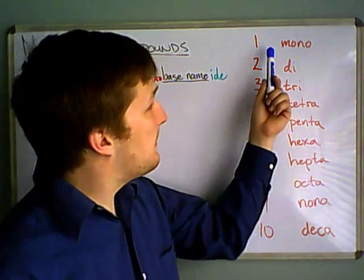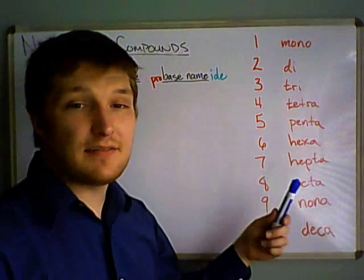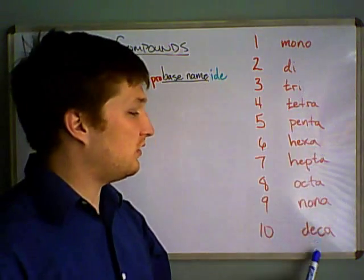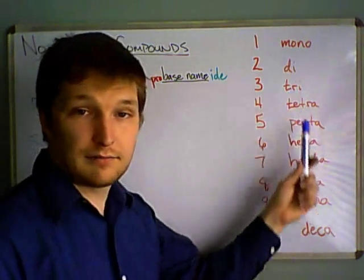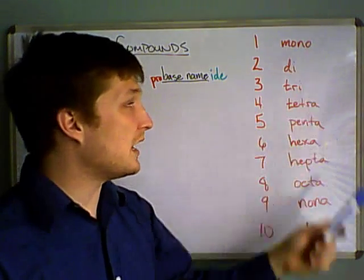So for instance, a prefix for if you have two atoms would be di. If you have five atoms of whatever, it would be penta. So this is a good thing to just go ahead and memorize. It's not that hard, you should already know mono, di and tri, and then the rest of them just come along.